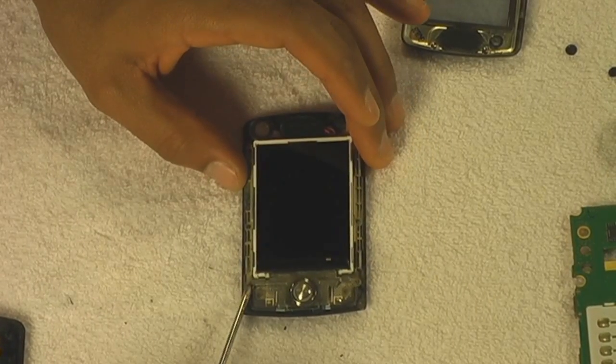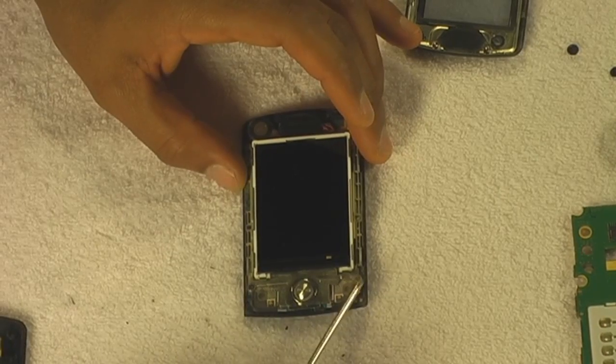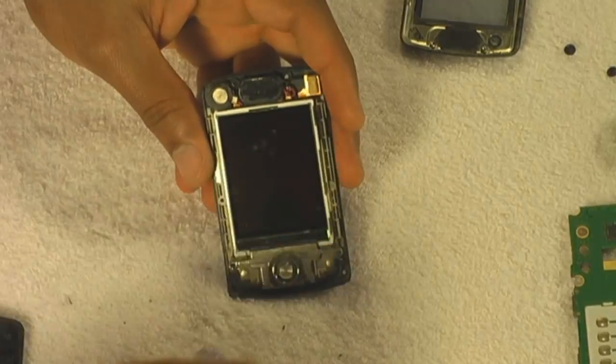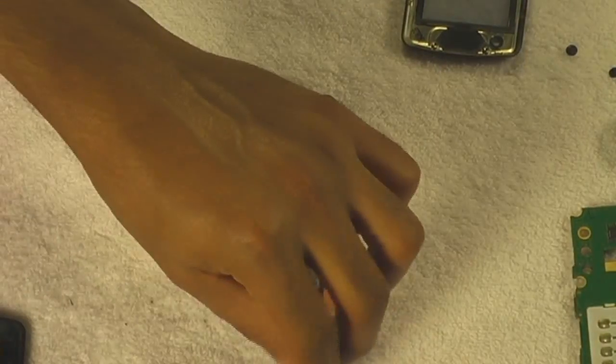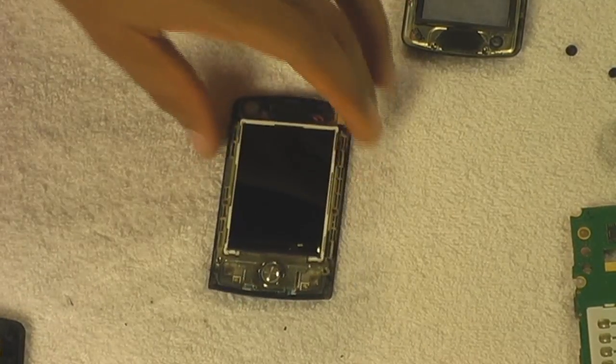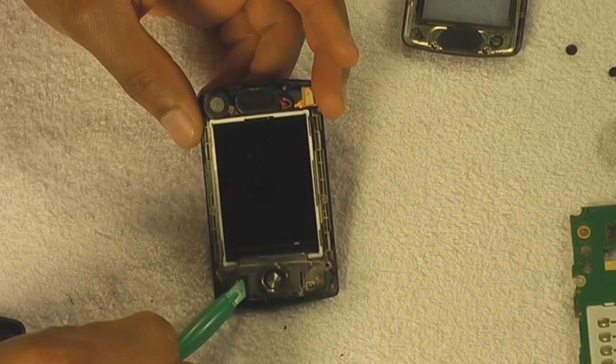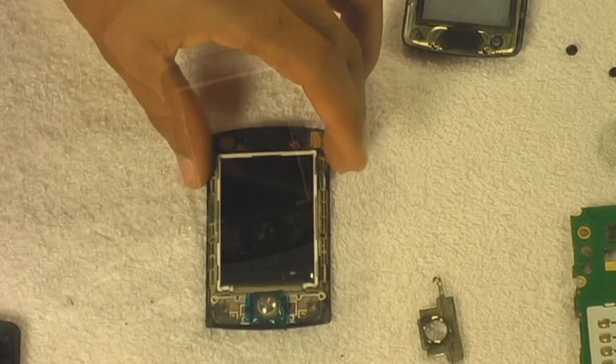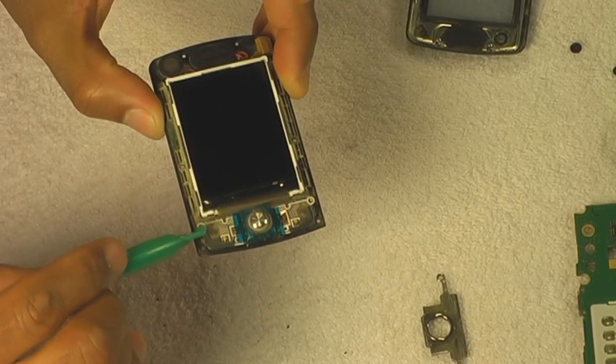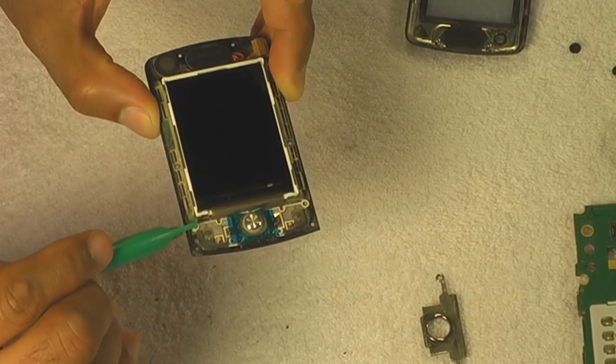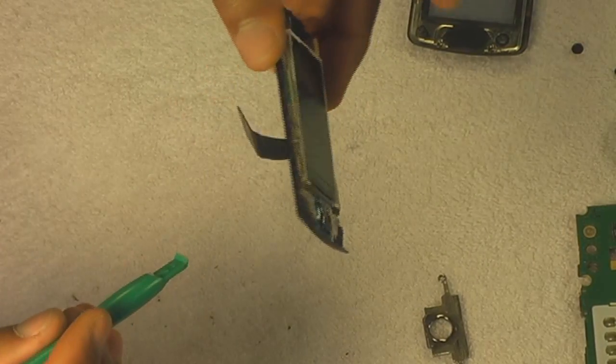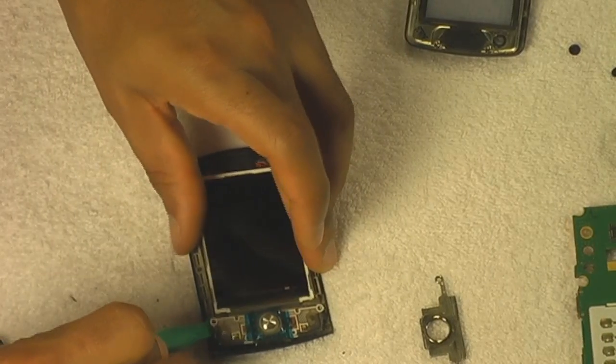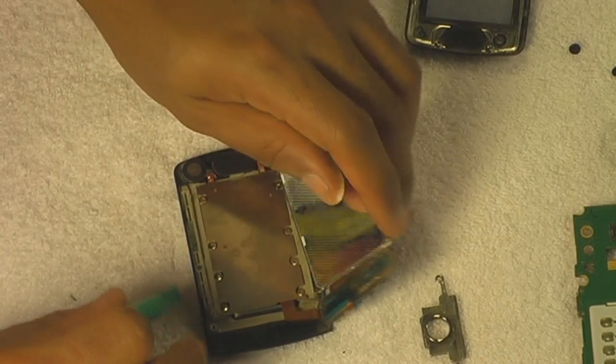All right, now let's take these two screws off which are holding the metal guard down. Now let's take off that metal guard. There you go, put that in a safe place. Now we're going to take this plastic pry tool and lift the LCD logic board, and then flip both units over.